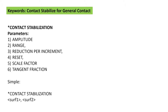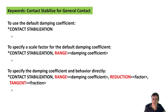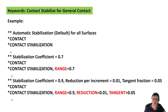The contact stabilization for general contact can be activated in the keyword CONTACT STABILIZATION with some parameters, and for specific surfaces if necessary. The keyword CONTACT STABILIZATION can be used with default values or with additional parameters such as range for the damping coefficient, reduction for the factor, or tangent for a fraction. The first example shows default automatic stabilization for all contacts. The second example shows a stabilization coefficient of 0.7, and the third example uses all additional parameters.